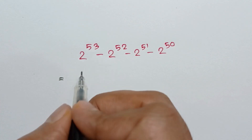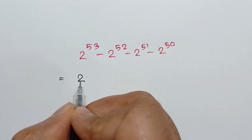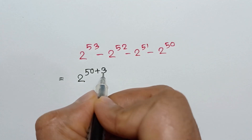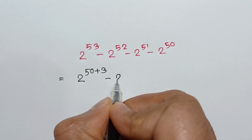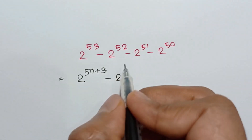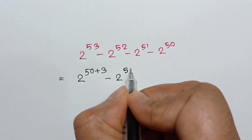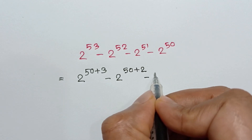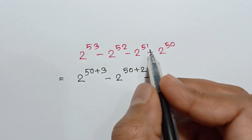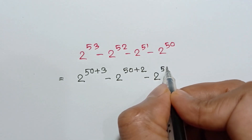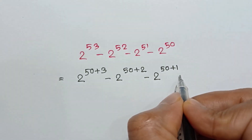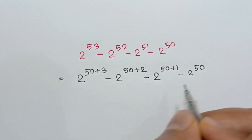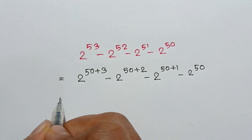So 2 to the power 53 can be written as 2 to the power 50 plus 3, minus 2 to the power 52 can be written as 2 to the power 50 plus 2, minus 2 to the power 51 can be written as 2 to the power 50 plus 1, minus 2 to the power 50.